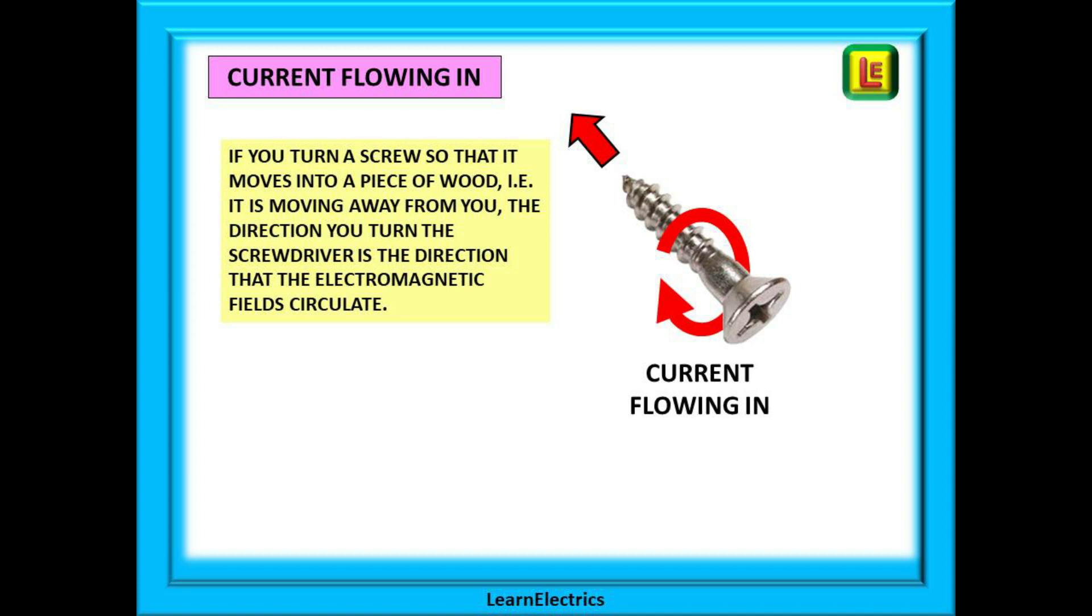The direction of rotation of these electromagnetic fields can be found by imagining that you want to insert a screw into a piece of wood. If you turn a screw so that it moves into the piece of wood we say that you are screwing it in, and the direction that you turn or rotate the screwdriver to do this is the direction that the electromagnetic fields circulate. So current flowing in will cause the fields to rotate clockwise.